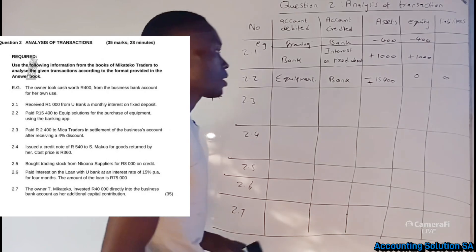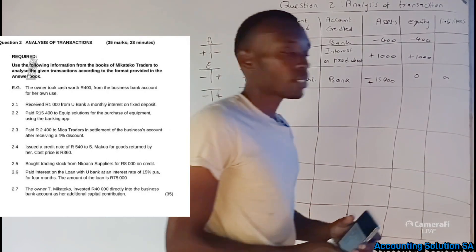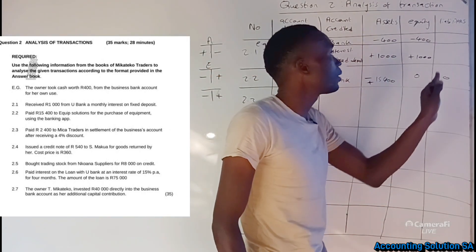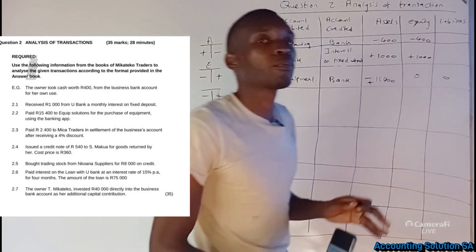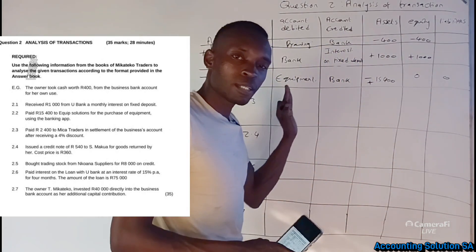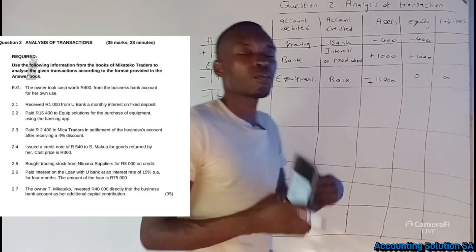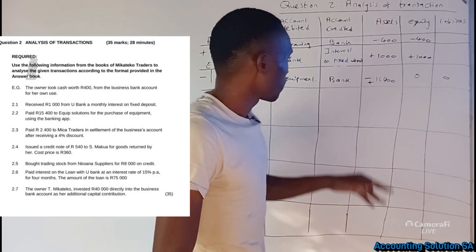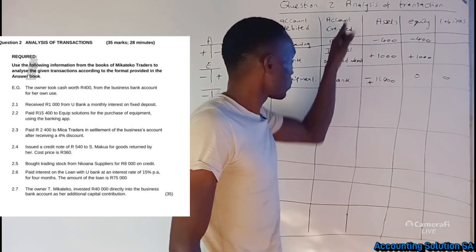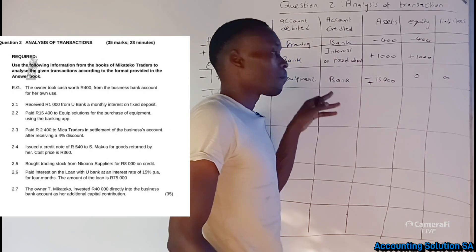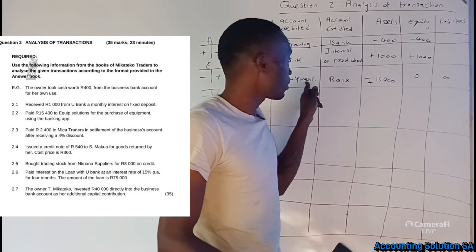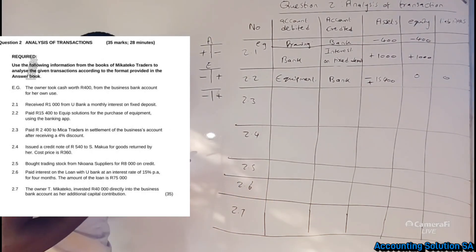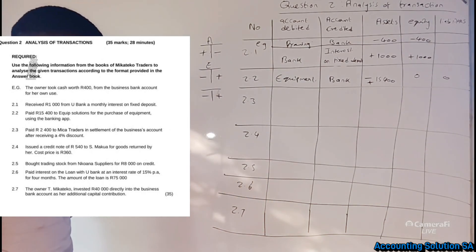It can happen that a transaction affects only assets, or only equity, or only liability, as long as one account is debited and another is credited. When money goes out, Bank is credited; when equipment comes in, Equipment is debited with a plus.